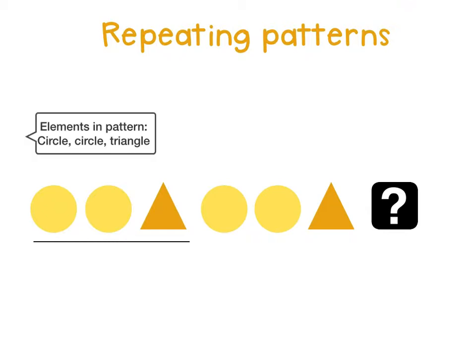The elements are the items, whether it be a shape, symbol, number or letter, that make up the pattern. In this example, the elements are circles and a triangle.